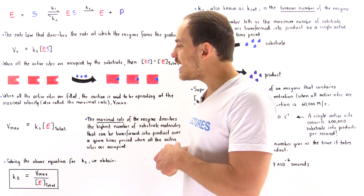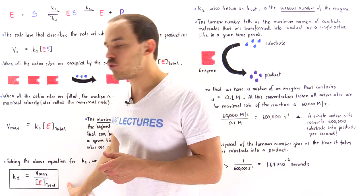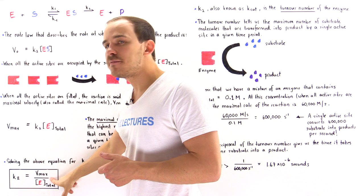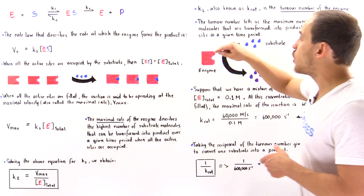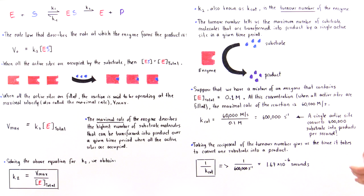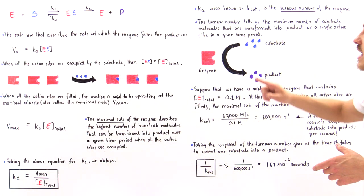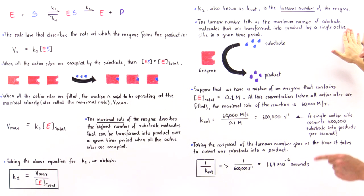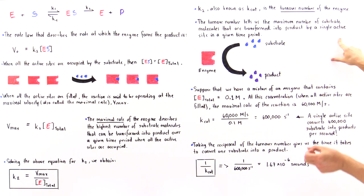If we solve the Vmax equation for K2, we get K2 = Vmax / E_total. This K2 is also known as Kcat and is called the turnover number of the enzyme. The turnover number tells us the maximum number of substrate molecules transformed into product molecules by a single active site per unit time.